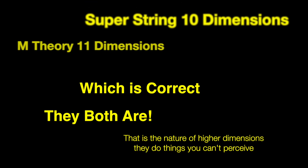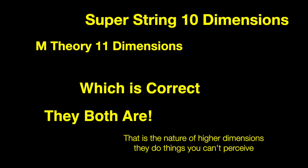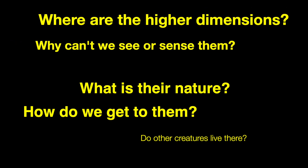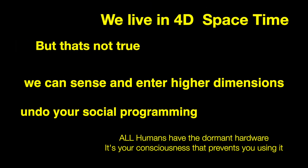SuperString theory states that there are 10 dimensions and M Theory states that there are a total of 11 — but which is correct? Consider that they both are, and I'll explain the quantum reason for that shortly. It also begs the question: where are the higher six or seven dimensions and what is their nature? Why can't we see them? I'll also prove to you that we don't just live in four dimensions, and I'll explain how you can feel and sense the 10th dimension given a total of five dimensions in what I'm going to call our sphere of influence.